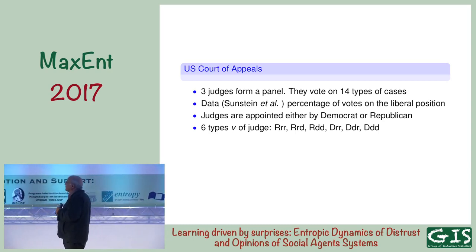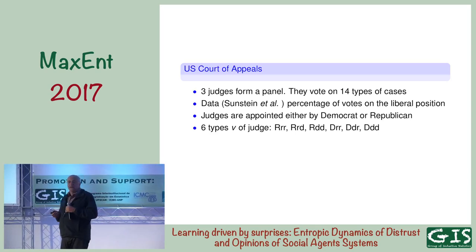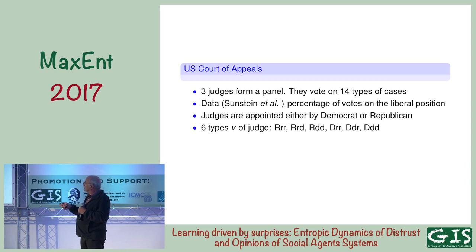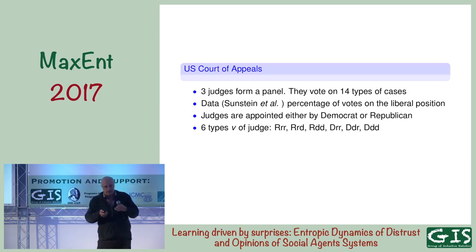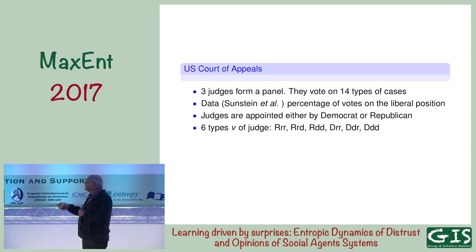The judges are appointed by either a Democrat or Republican president, and therefore there are six types of judges: a Republican voting together with two other Republicans; a Republican with another Republican and a Democrat; a Republican with two Democrats; a Democrat with two Republicans; and so on. The capital letter indicates the judge I'm looking at — so I'm looking at the votes of a Republican or a Democrat in a given context.